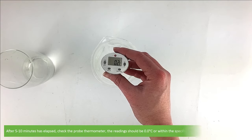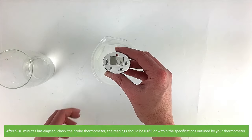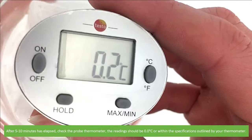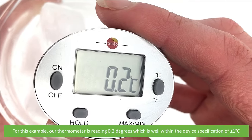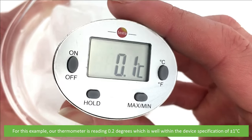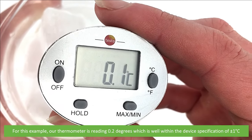After five to ten minutes has elapsed, check your probe thermometer. The reading should be zero degrees Celsius or within the specifications outlined by your thermometer. For this example, our thermometer is reading 0.2 degrees, which is well within the device specifications of plus or minus one degree Celsius.